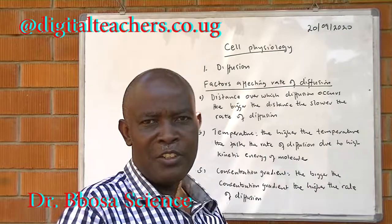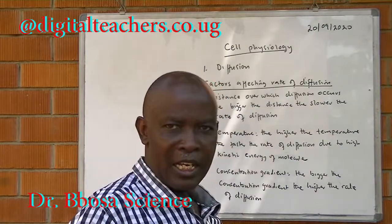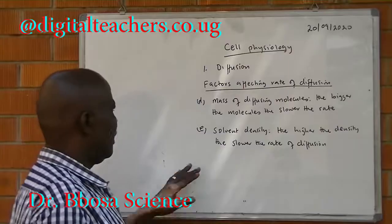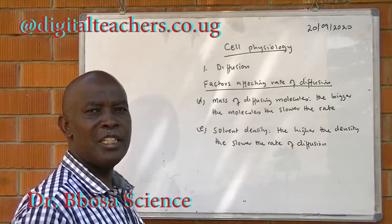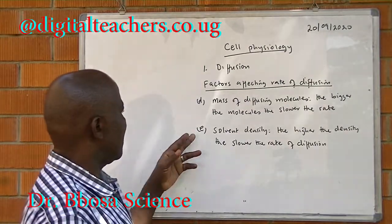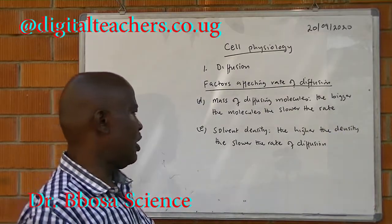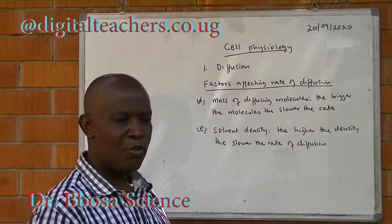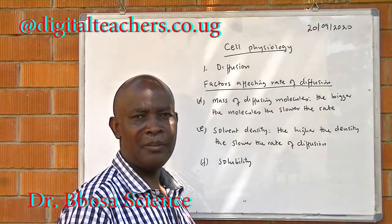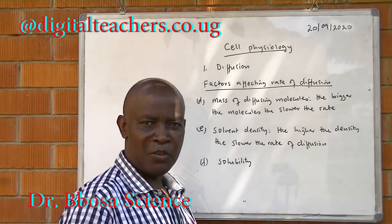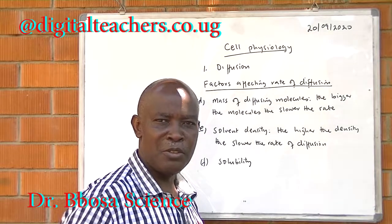C: concentration gradient — the higher the concentration gradient, the higher the rate of diffusion. D: mass of diffusing molecules — the heavier or bigger the molecules, the slower the rate of diffusion. E: solvent density — the higher the density of the solvent, the slower the rate of diffusion. F: solubility — nonpolar molecules are soluble in the cell membrane and diffuse easily through, while polar molecules don't dissolve in the cell membrane and don't diffuse through.